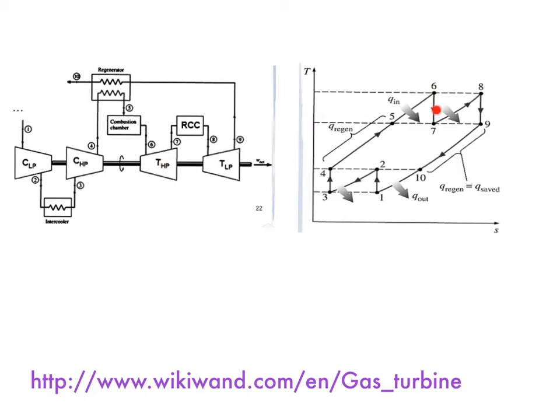So 6 to 7 is actually your high pressure turbine, where your gas product is expanded from this high pressure, becoming this intermediate pressure.